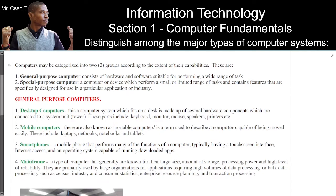Computers may be categorized into two groups according to the extent of their capabilities. One: general purpose computer — consists of hardware and software suitable for performing a wide range of tasks. Two: special purpose computer — a computer or device which performs a small or limited range of tasks and contains features specifically designed for use in a particular application or industry.